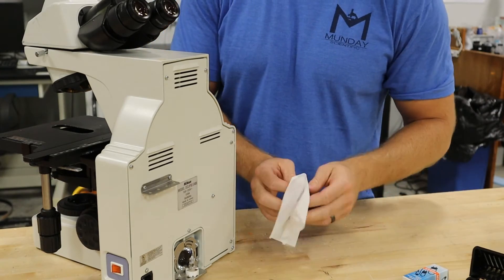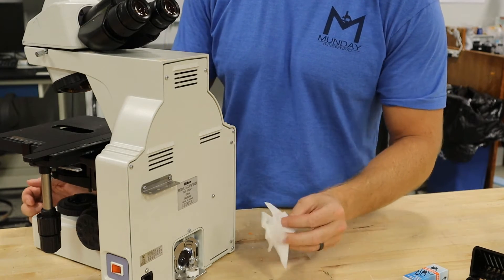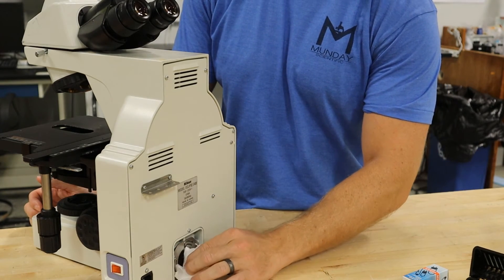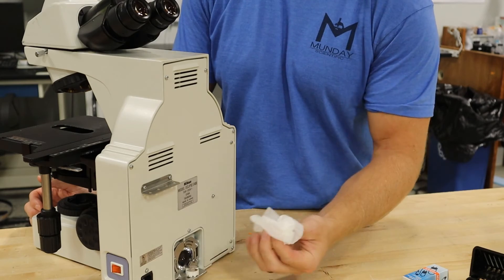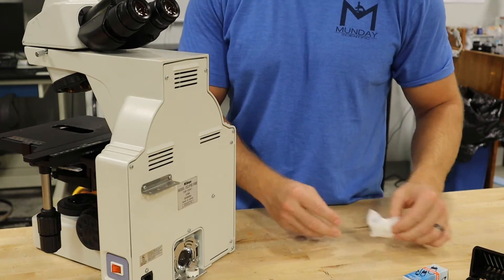We're going to take a chem wipe or a tissue, anything to remove the old bulb. You want to let it cool if the microscope has been running and the bulb has been on.